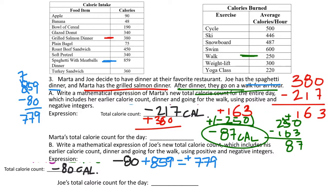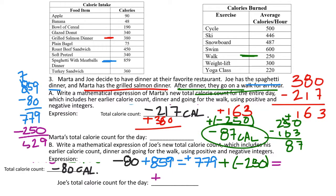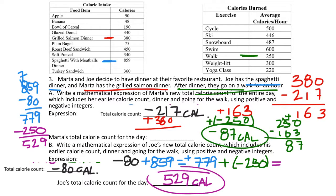Joe then goes on the same walk, which burns -250 calories. So 779 + (-250): more positives than negatives, so the answer is positive. Taking 779 - 250 = 529. Joe ends the day having gained a net 529 calories. You don't need to show the positive sign, but it would be acceptable on this assignment.